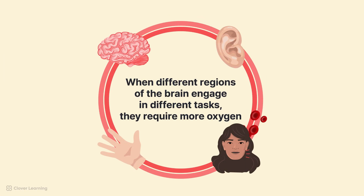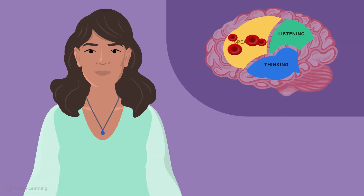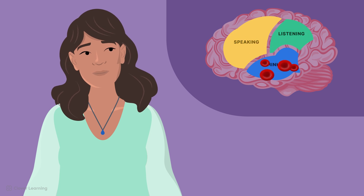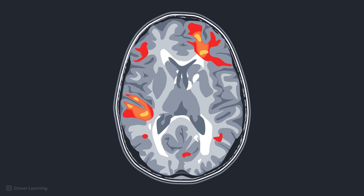When different regions of the brain engage in different tasks, they require more oxygen. For example, when the brain engages in various tasks such as speaking, listening, or thinking, it requires more oxygen. The areas of the brain responsible for these tasks receive more blood via oxygenated hemoglobin. fMRI allows us to visualize the areas of the brain that are activated, because oxygenated hemoglobin will be concentrated in those regions, appearing brighter on the scan.